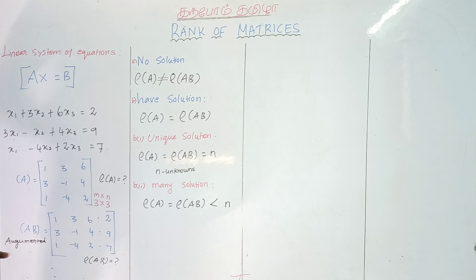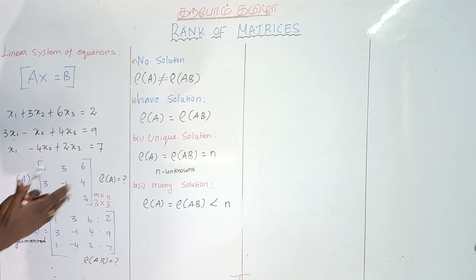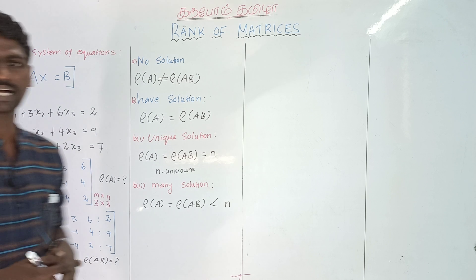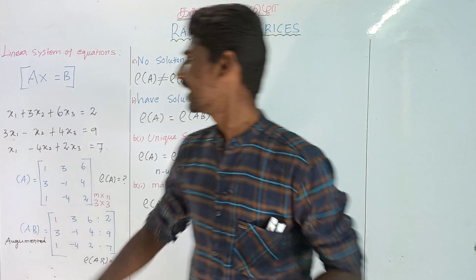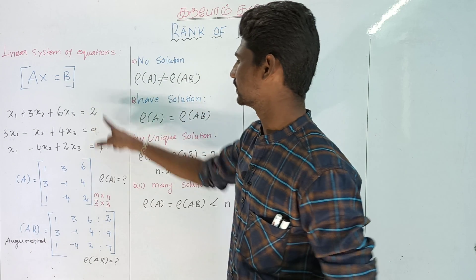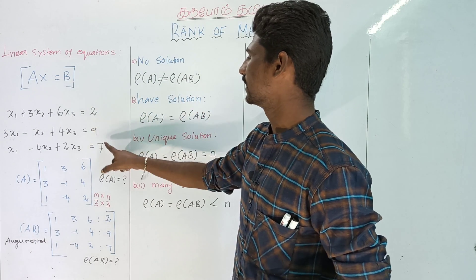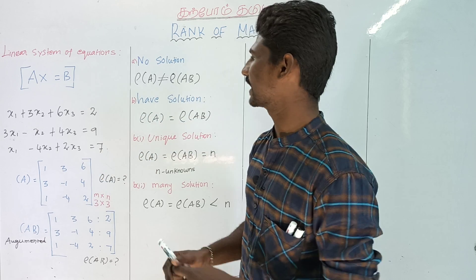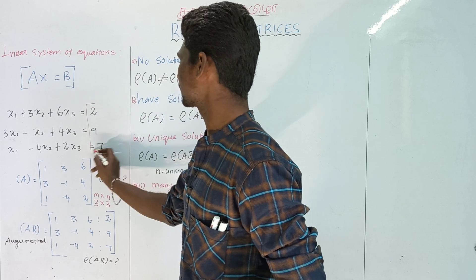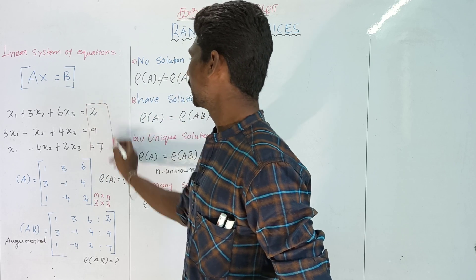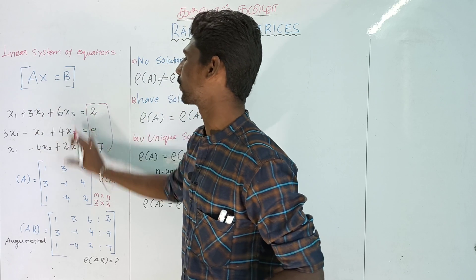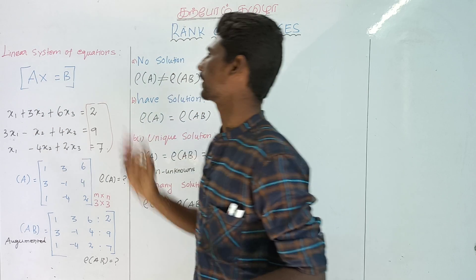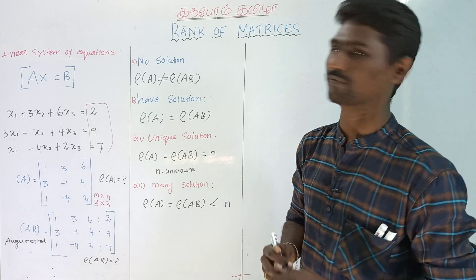The unknown matrix X is x1, x2, x3. It is the unknown matrix. The constant matrix B has values 2, 9, 7. If we apply this formula, we will talk about the linear system of equations.